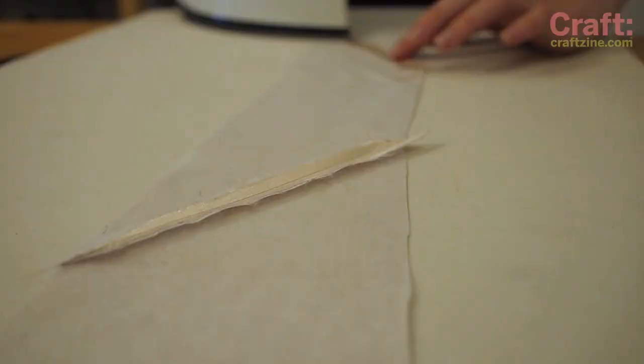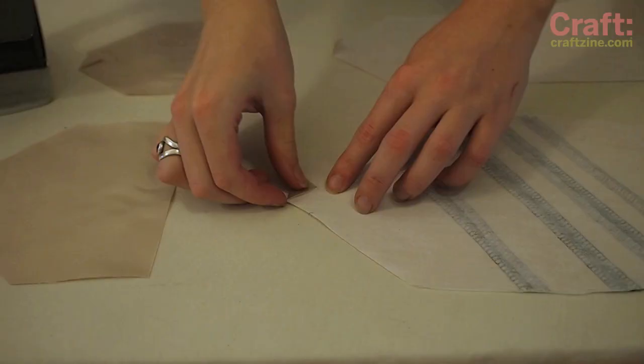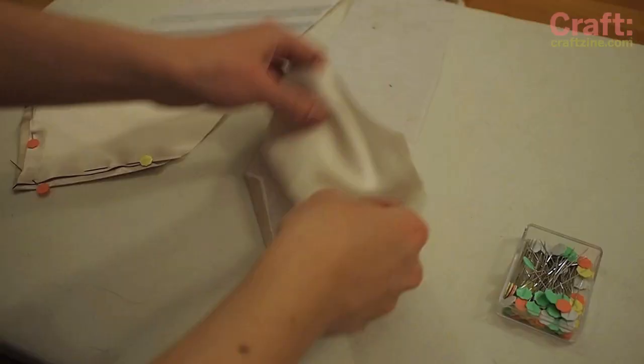Pin and sew the tie pieces together as shown and then press the seams open. Press up the point of each of the four chevrons and then press a quarter inch hem up the slanted edges.